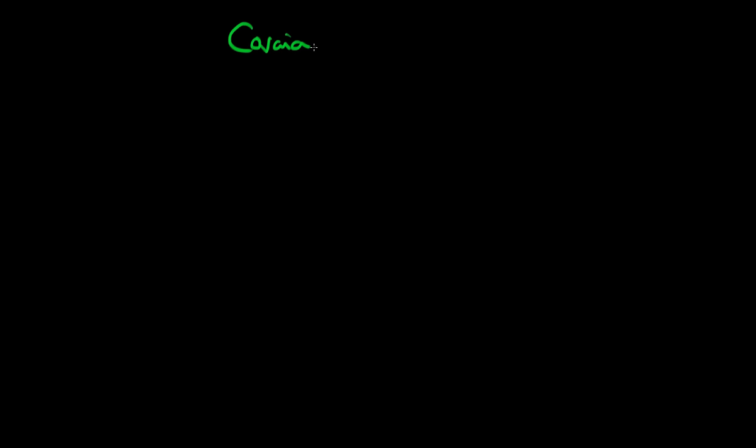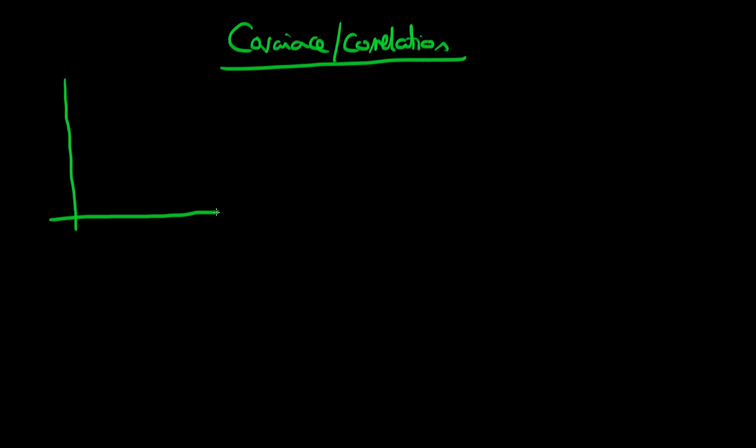In this video, I want to talk about the covariance and the correlation between two random variables. Let's think about a particular example. Let's think about if we had two random variables, X and Y, and if we plot a few realizations of these two random variables.